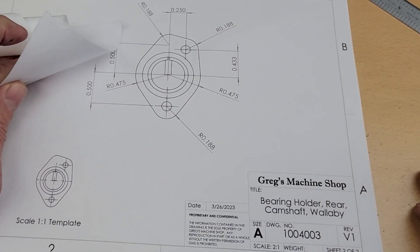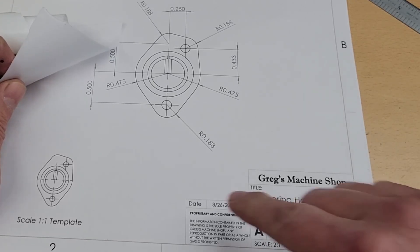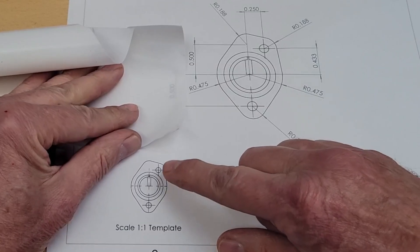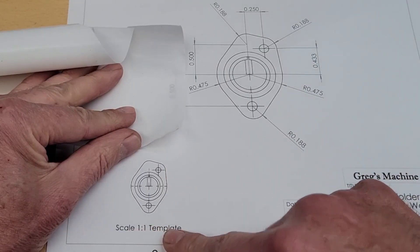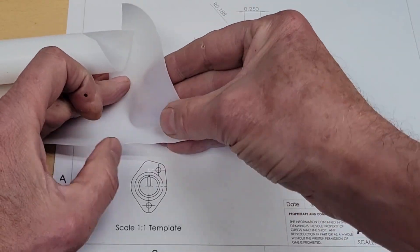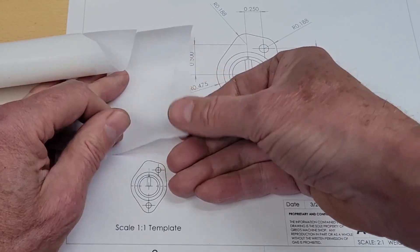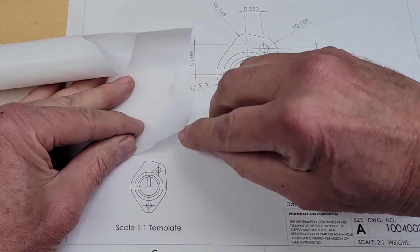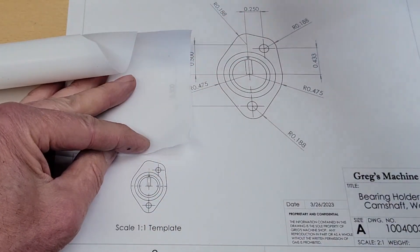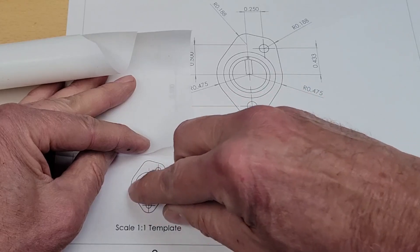So the first gasket we're going to focus on here is the rear camshaft bearing holder. As mentioned before, the simplest way to do this probably would be just to take this one-to-one template, cut this out, lay it on top of our gasket material. So this here is 10,000th PTFE sheet or Teflon. Tape it on there, take my X-Acto knife and just trace this and cut it out. And maybe lay this on top of the engine, cut these holes out.